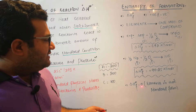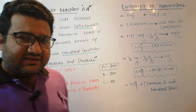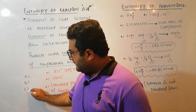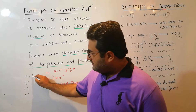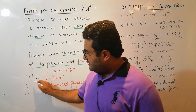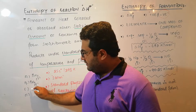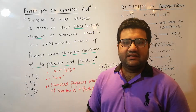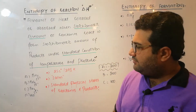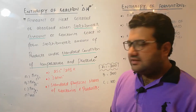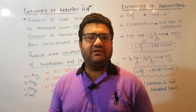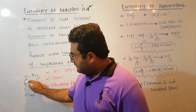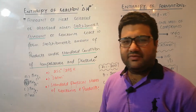The enthalpy of formation is zero when elements are present in their standard form. For example, if given options of bromine solid, bromine liquid, and bromine gas — for which is the standard enthalpy of formation zero? The standard enthalpy of formation is zero only if the element is present in its standard form, and the standard form of bromine is liquid. So for Br₂ liquid, the enthalpy of formation is zero.